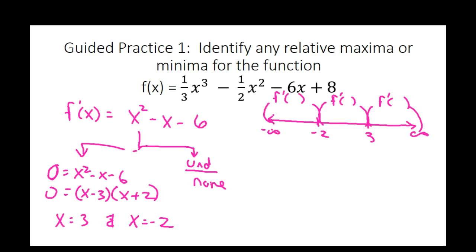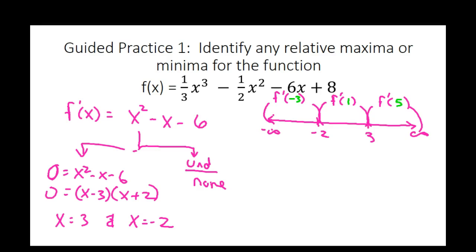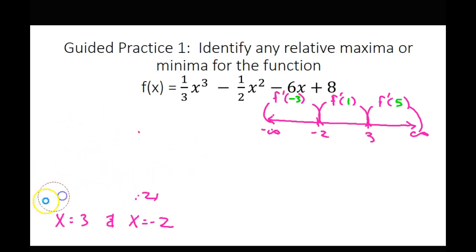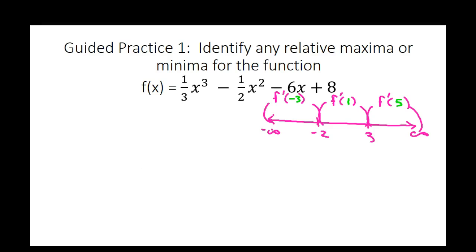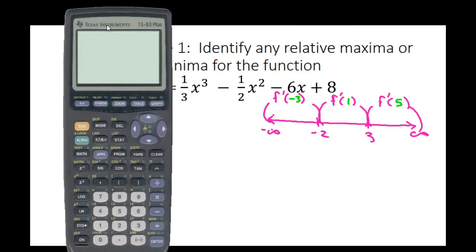I'm going to pick test points. Negative 3 works for the first interval, 1 for the middle interval, and 5 for the last one. Now I want to show you a calculator trick. Sometimes you have functions that are a big pain to plug in over and over again, so I'll show you how to let your calculator do a lot of this work.